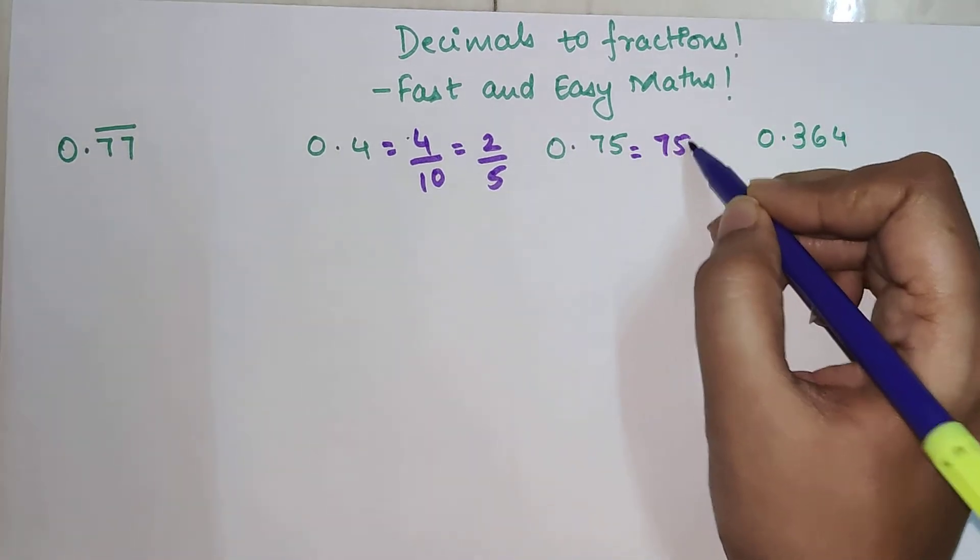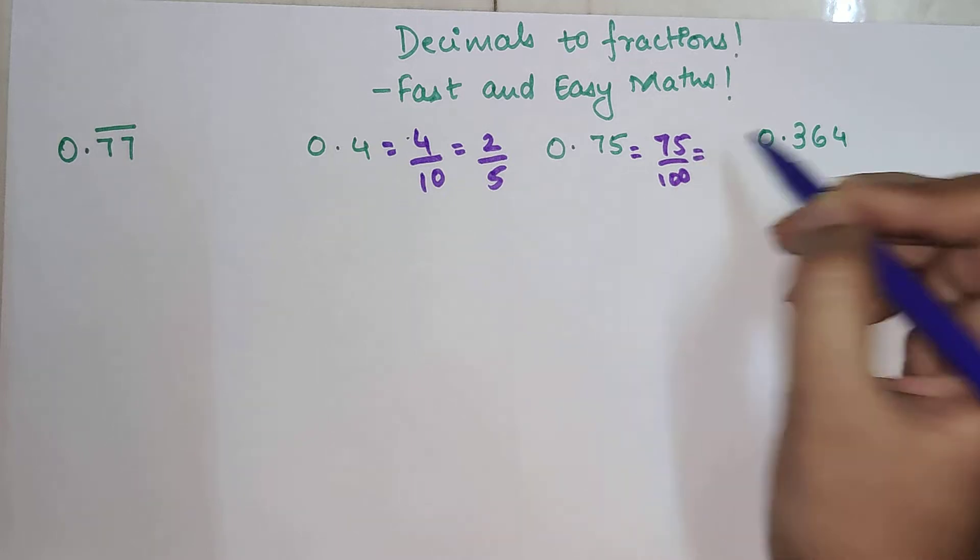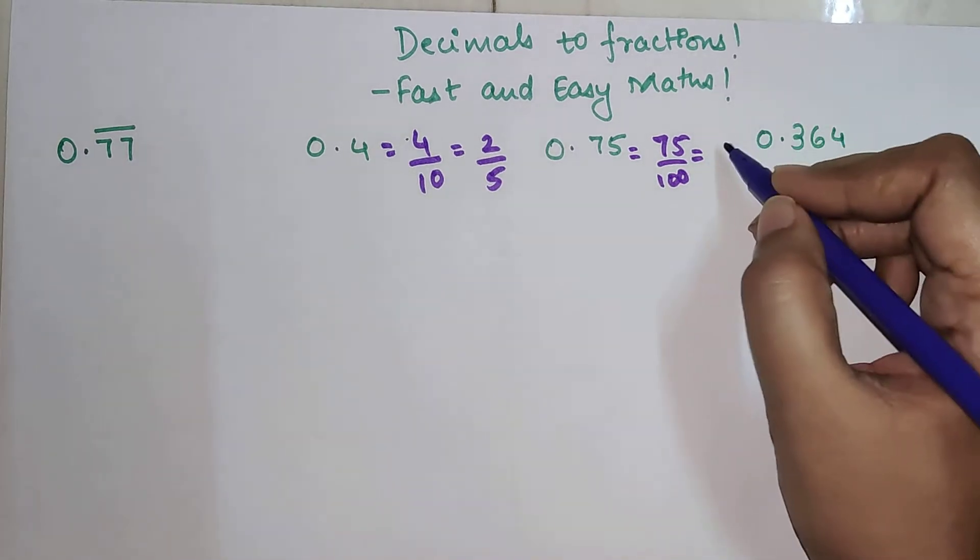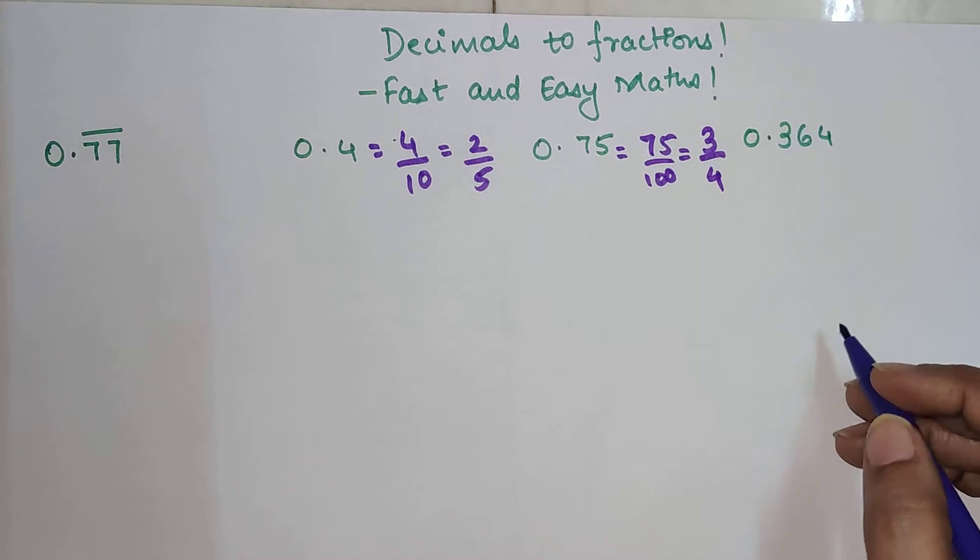Now this will be 75 upon 100. Both of them are going into 25 tables, so this will be 3 upon 4.